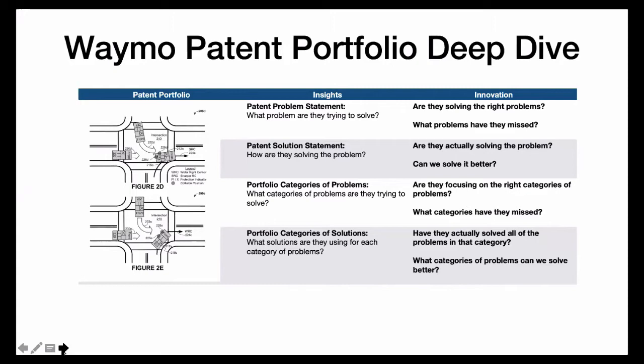For each patent, we extract the patent problem statement—what problem are they trying to solve—and then the solution statement: how did they solve that problem. Once we've looked at the entire portfolio, we break it up into categories of problems—what categories are they trying to address—and categories of solutions: how are they trying to address and solve the problems in those categories.